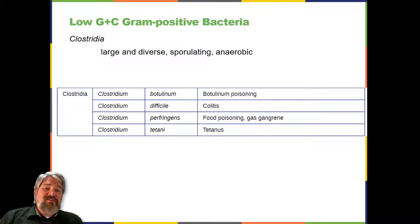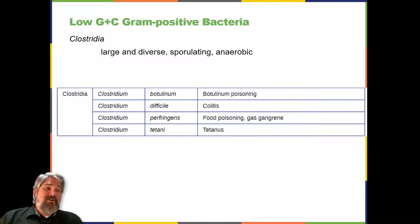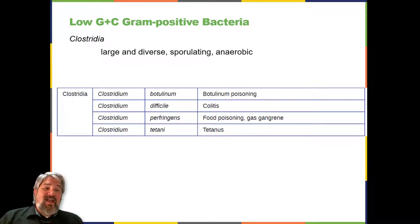One large and diverse class of low-GC Gram-positive bacteria is Clostridia. The best-studied genus of this class is Clostridium. These rod-shaped bacteria are generally obligate anaerobes that produce endospores and can be found in anaerobic habitats like soil and aquatic sediments rich in organic nutrients. The endospores may survive for many years. Clostridium perfringens is the third most common cause of food poisoning in the United States and is the causative agent of gas gangrene.